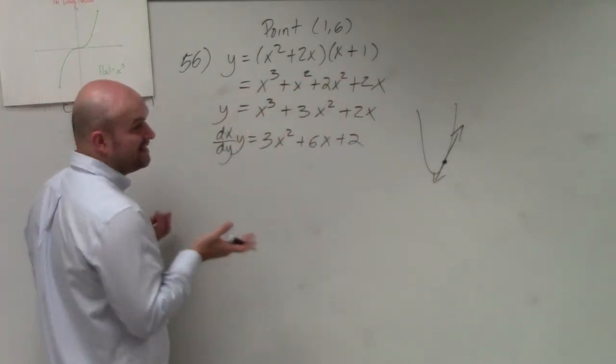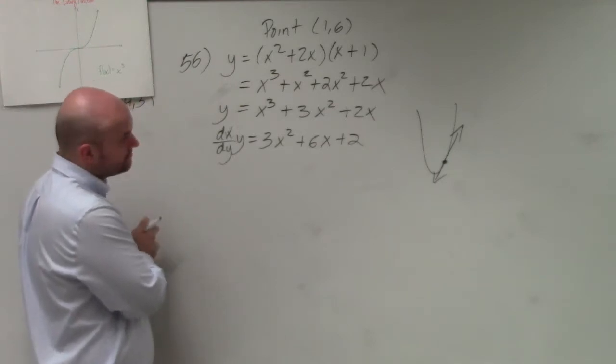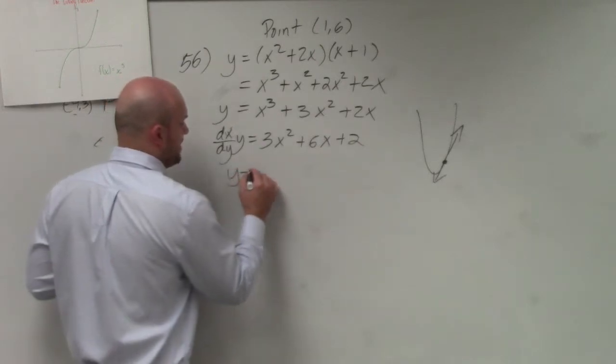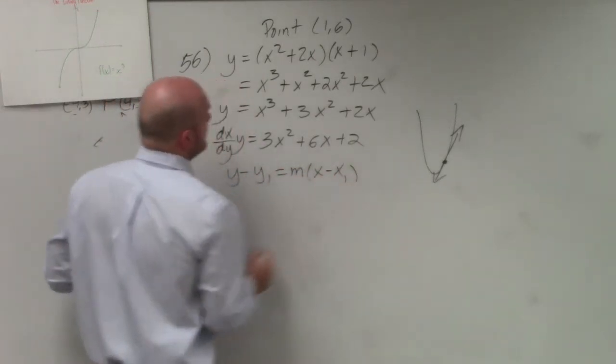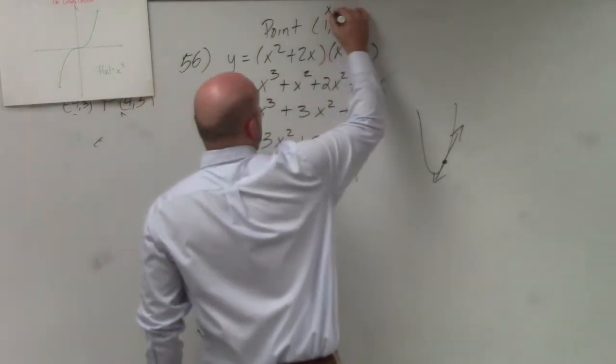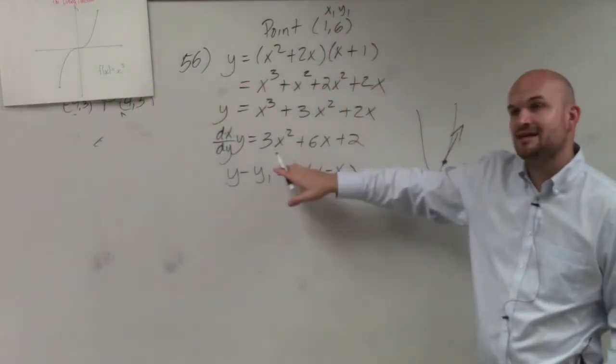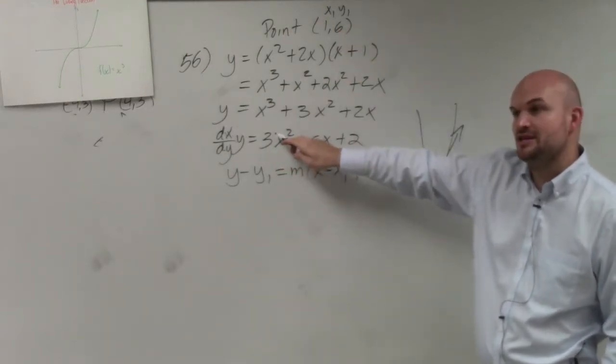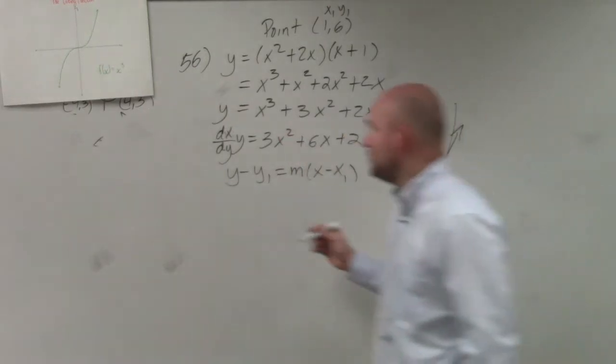So remember, to write the equation of the line, we need to be able to identify what is our slope. We know there's a point, we have (1, 6). To write the equation of the line, y - y₁ = m(x - x₁). We have x₁ and y₁, we just need to find the slope. So all we need to do to identify the slope is just plug in our point into our derivative, because that tells us what the slope will be at that given point.